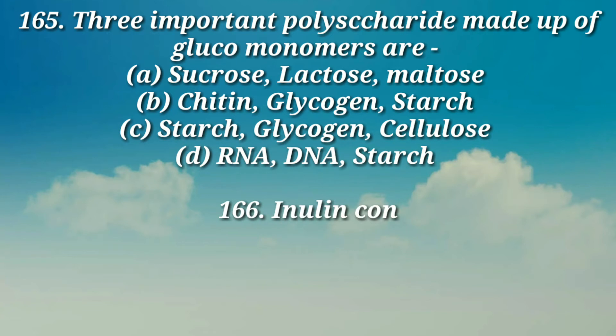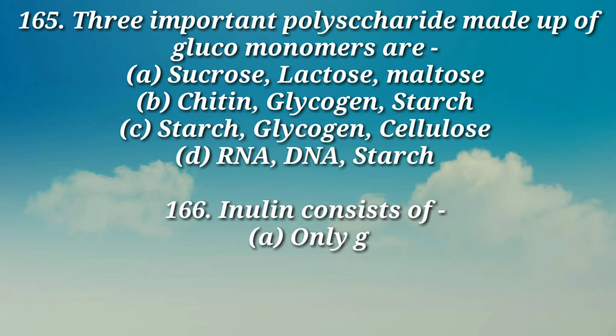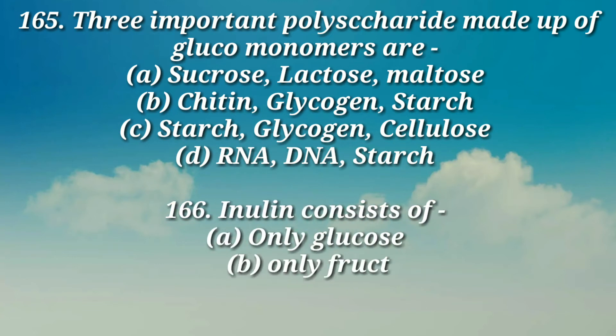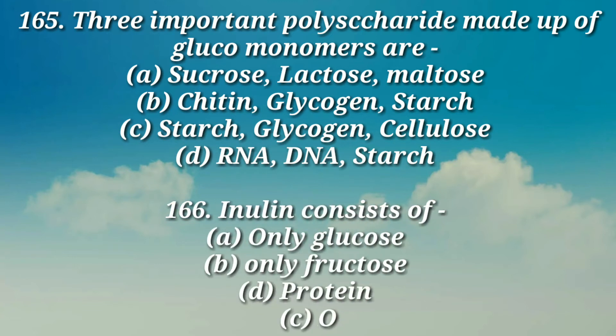Question number 165: Three important polysaccharides made up of glucose monomers are — a) sucrose, lactose, maltose, b) chitin, glycogen, starch, c) starch, glycogen, cellulose, d) RNA, DNA, starch.